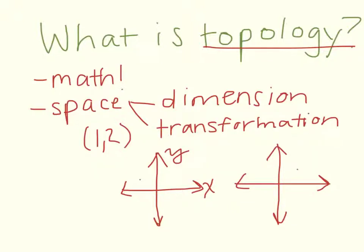Topologists are interested in studying the properties of space that are conserved even when you stretch or bend space. However, topologists aren't interested in types of deformations that involve tearing space or re-gluing it back together. This means that continuity is particularly important in topology.